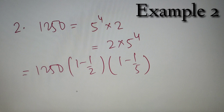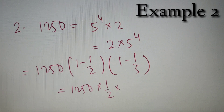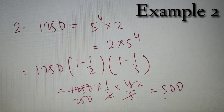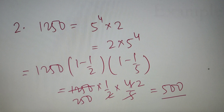We calculate: 1250 × (1/2) × (4/5). Here 2 and 4 cancel to give 2, and 1250 and 5 cancel to give 250. So we get 250 × 2 = 500. Therefore the Euler's Totient value of 1250 is equal to 500.